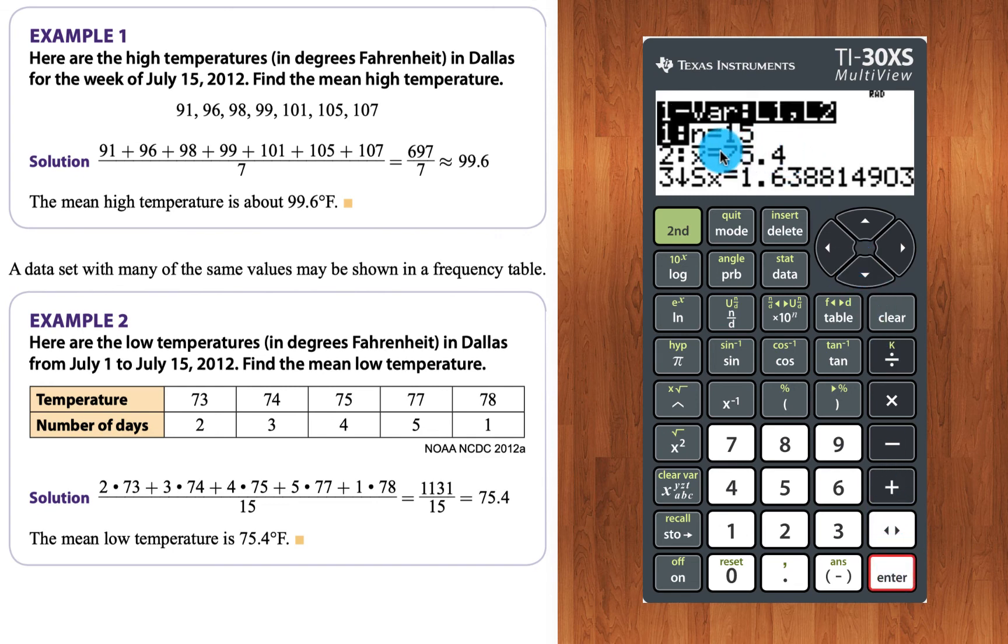We see here that there are 15 pieces of data. Huh? How can that be? Well, if we have 2, and 3, and 4, and 5, and 1, that sums up to a total of 15 data items. So that's where the 15 came from. It did correctly compute the average or mean as 75.4.